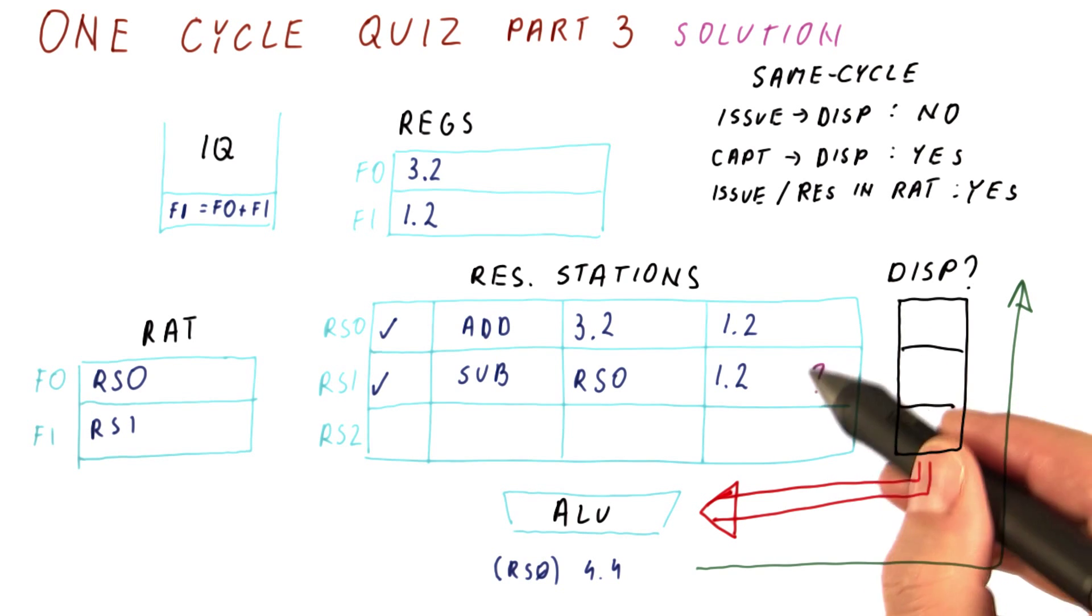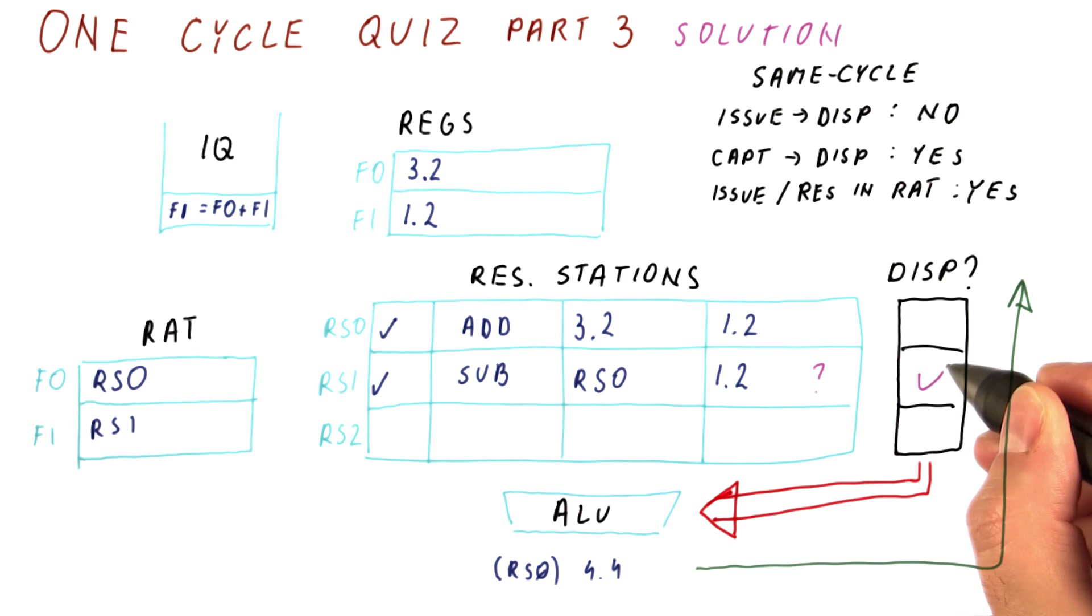So the only instruction eligible for dispatch is this one, which means that's the one that gets to dispatch.